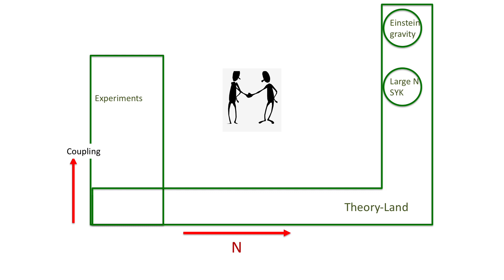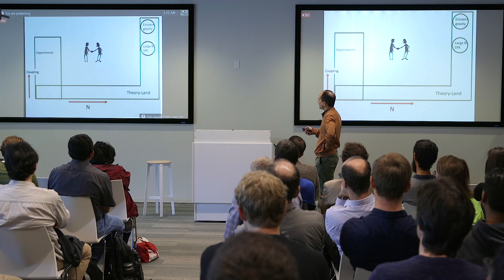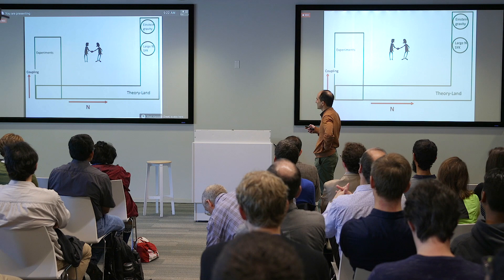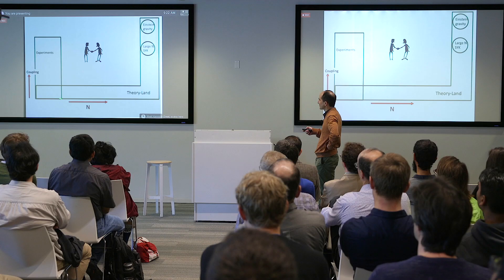Let me do a little cartoon to orient ourselves. In this discussion, there are basically two parameters to pay attention to: one is the number of qubits n, and the other is the coupling between the qubits—how strongly interacting they are with each other. Theory land, where theorists like to live, is either very large n and very strong coupling—that's where we expect to find Einstein gravity—or very weak coupling at any n, which is easy to analyze.